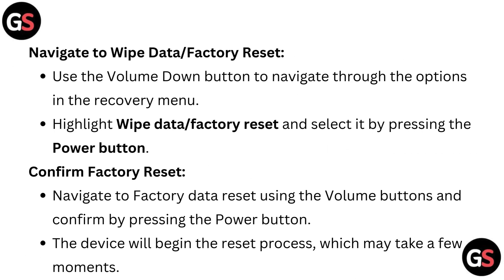Navigate to wipe data or factory reset. Use the volume down button to navigate through the options in the recovery menu. Highlight wipe data or factory reset and select it by pressing the power button.